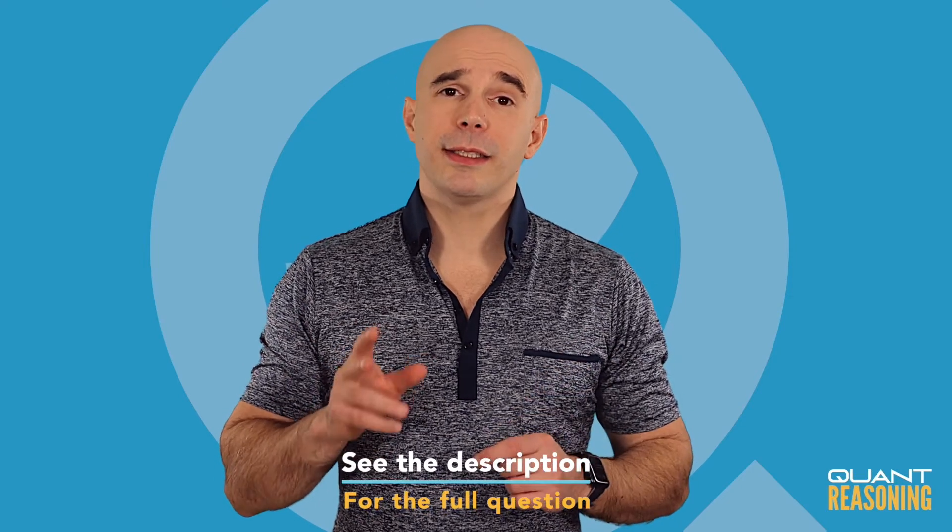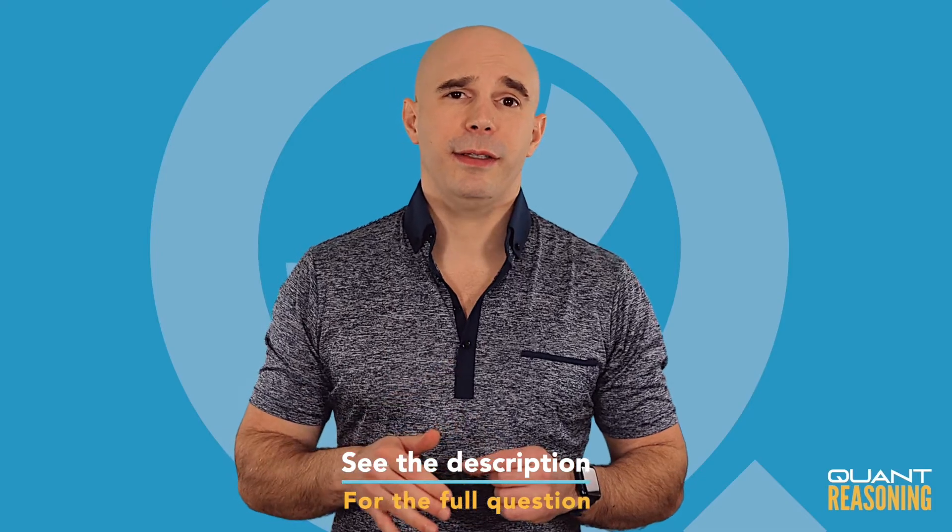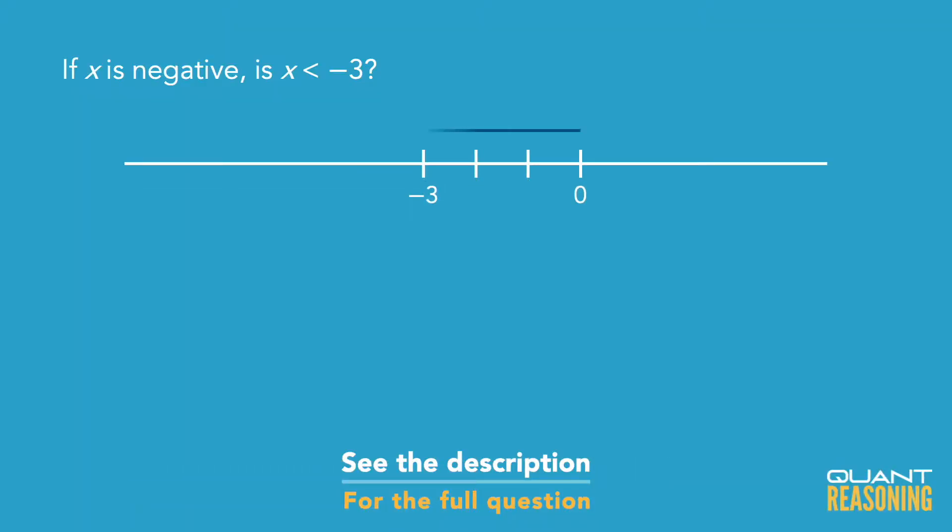This question tells us that x is negative and is asking whether it's less than negative 3. So it might be a good idea to draw a number line and place 0 and negative 3 on that number line. Look, I know that x is to the left of 0, I just want to know which side of negative 3 it's on.